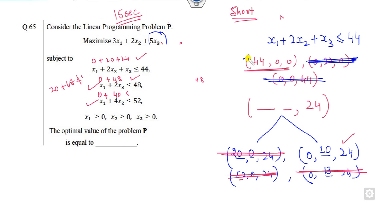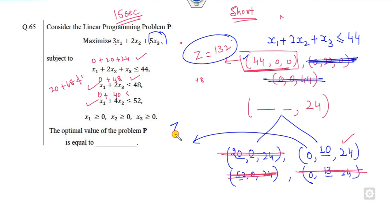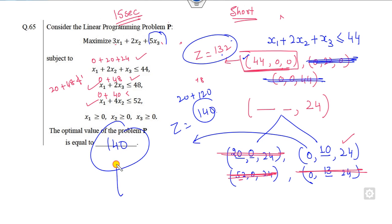So we now have two candidate feasible solutions. The objective value for (44, 0, 0) is 3 × 44 = 132. The objective value for (0, 10, 24) is 20 + 120 = 140. Therefore 140 is the maximum and the right answer for question 25. This is how you can solve this question within a fraction of a second, instead of applying the long simplex method.